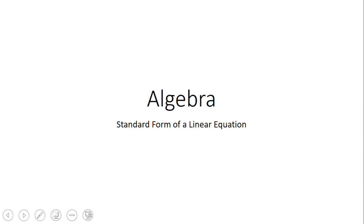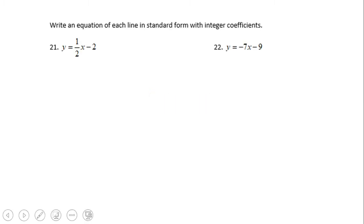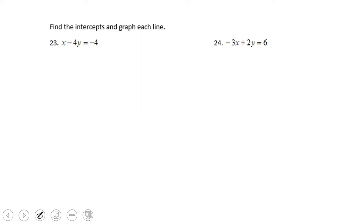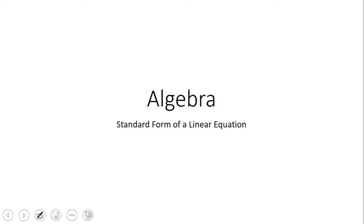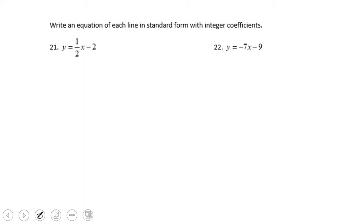Welcome and welcome back on C-Square. In this video clip we're going to talk about the standard form of a linear equation. First, let's see what this standard form is. If you remember, the slope-intercept form is y equals mx plus b. The standard form looks like this: ax plus by equals c.